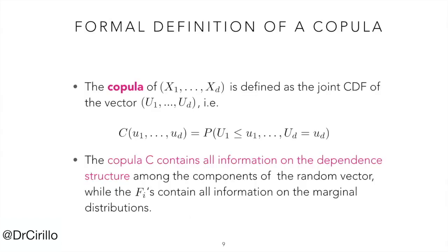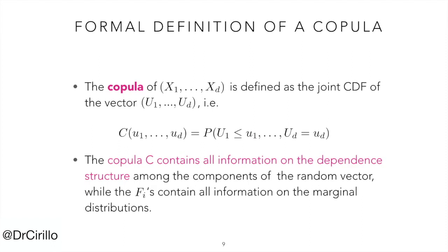A copula for X1 to Xd is defined as the joint distribution function of the new uniform vector U. The most interesting aspect of copulas is that we can show that the function C contains all the information on the dependent structure among the components of the random vector, while the Fi's necessarily contain all the information on the marginal distributions.